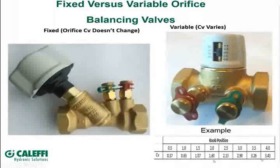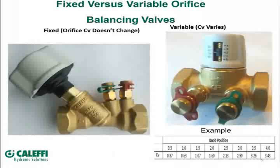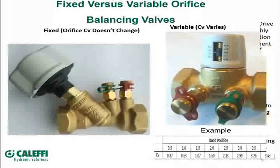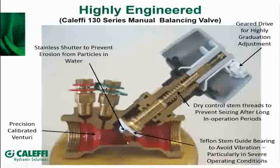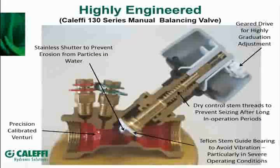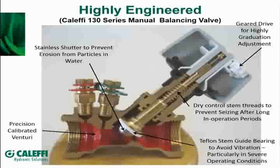There are different ways to balance systems, and these valves would be applied for different applications depending on what kind of adjustability you need. Here's a cutaway of the 130 valve — you can see the venturi orifice. That orifice being fixed between these two test ports is why that relationship doesn't change. Changing the adjustment yes allows you to change flow and balance with this valve, but you can't change the relationship across those two fixed ports, which is why it's considered a fixed orifice balancing valve.